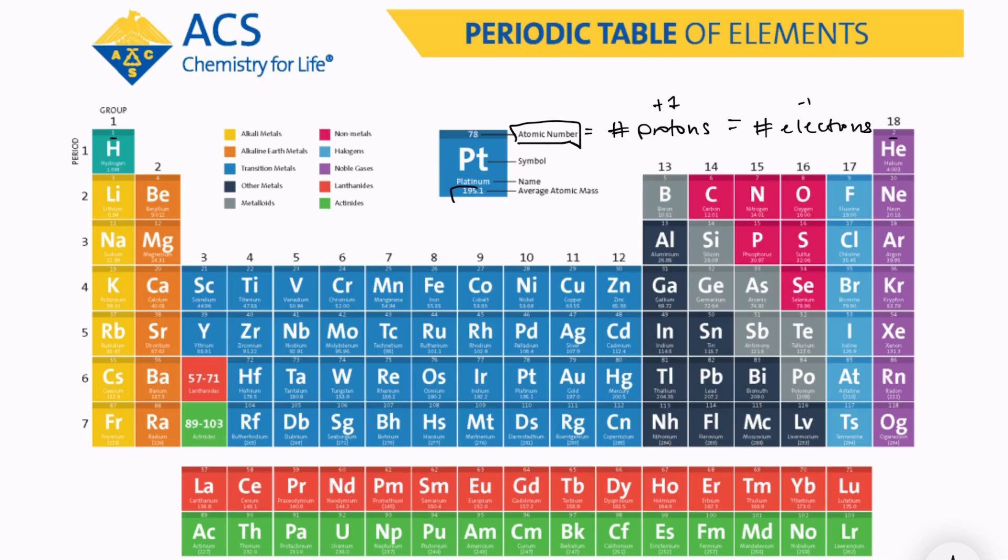We also need to pay attention to the average atomic mass. The atomic mass comes from the weight of the nucleus. And remember, in the nucleus we have protons and neutrons. So the average atomic mass is equal to the number of protons plus the number of neutrons in the atom. So we can easily figure out the number of neutrons by taking the average atomic mass and subtracting the atomic number.